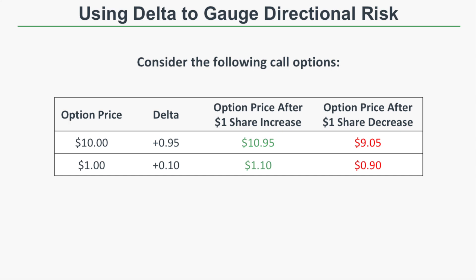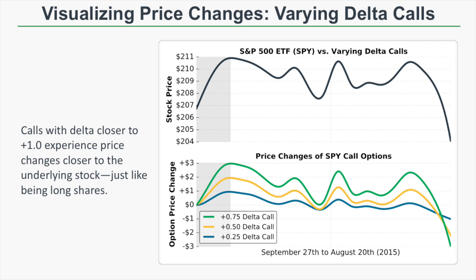Let's talk about how to use Delta to gauge directional risk. Consider a call option priced at $10 with a Delta of 0.95 — after a $1 share increase it rises to $10.95, and after a $1 decrease it falls to $9.05. Compare that to a $1 option with a Delta of 0.10, which only moves $0.10 per $1 stock move. Options with larger Delta values have more directional risk because their prices fluctuate more with each $1 change in the underlying.